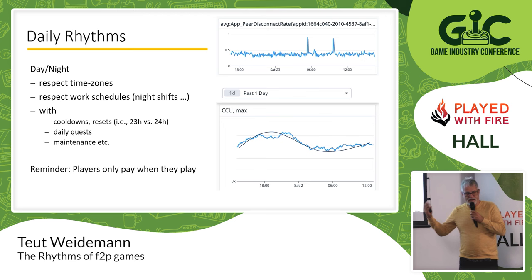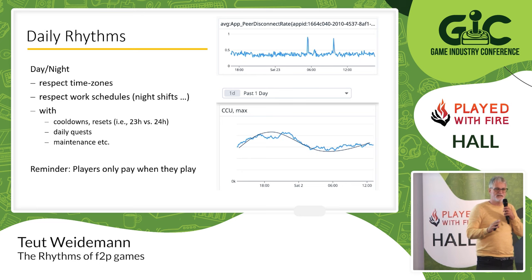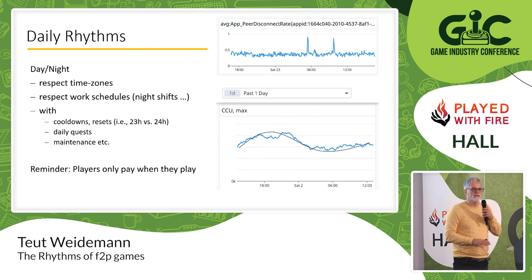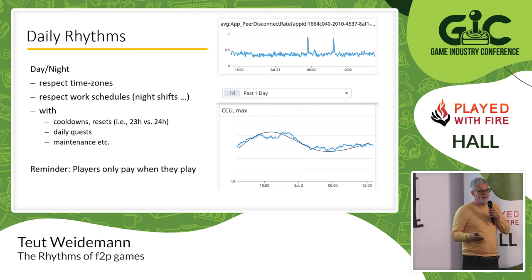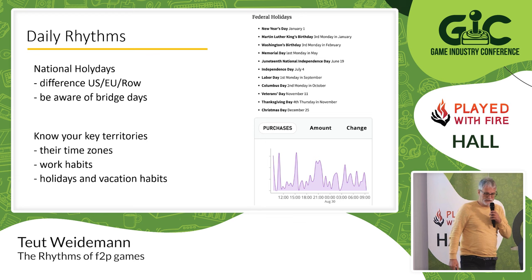The number one rule: players only pay when they play. It's a very fundamental rule but many games ignore it. Take Candy Crush — after you use up your three hearts, you have to stop playing to wait to reload them. That's very bad monetization design. You should let your players play as long as they like. The longer they play, the higher the chances they actually pay. You have to ensure your game runs 24 hours, seven days a week, so that everybody can play when they want.